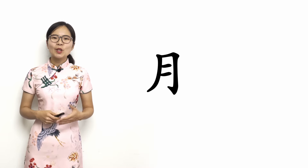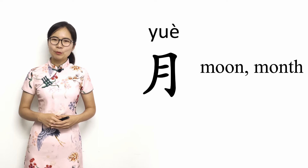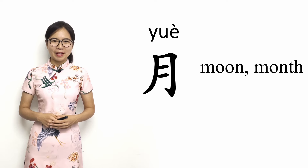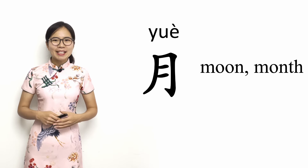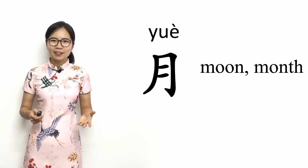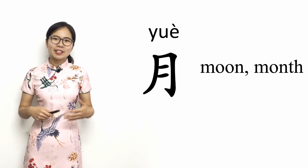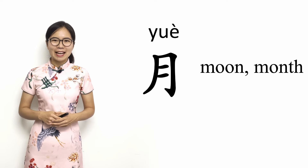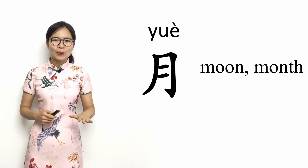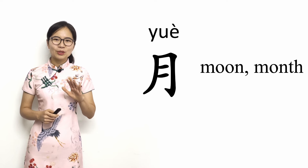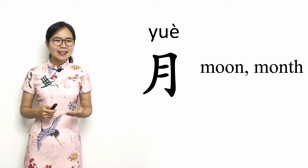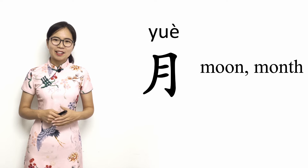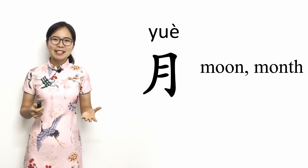Our second character in this lesson is 月, which means moon or month. Traditionally, China used a lunar calendar, and each new moon marked the start of the month. That's why moon and month are the same character in Chinese. This character looks like a drawing of a smiling moon. 月.